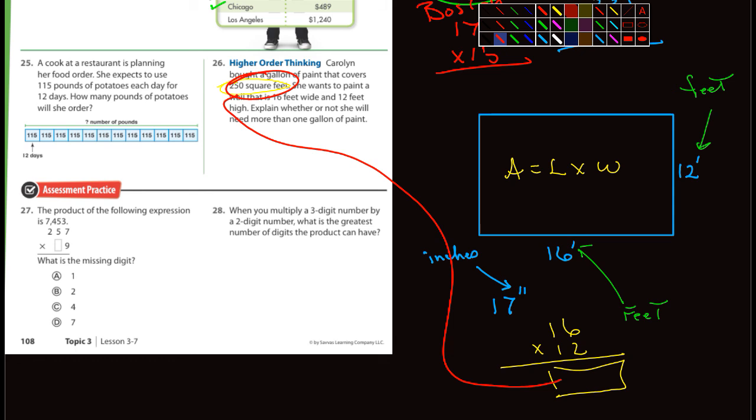Problem 27, you can do that, find the missing number. Problem 28: When you multiply a three-digit number by a two-digit number, what's the greatest number of digits the product can have? What's the greatest single digit? Nine. So three nines times two nines, figure that out. You'll have to multiply 999 by 99 and see how many digits there are.